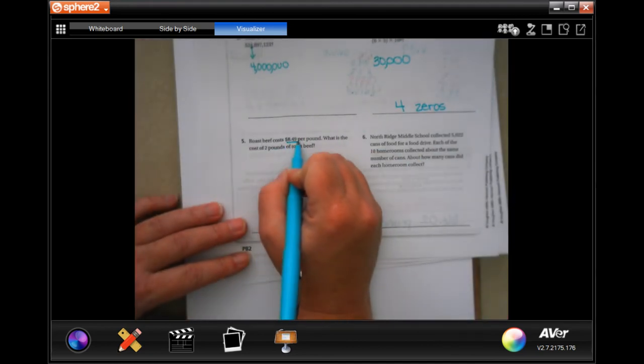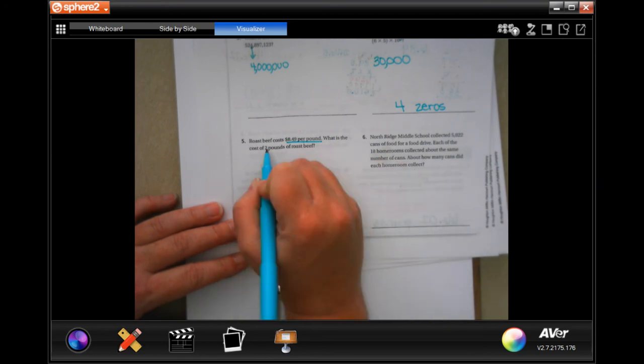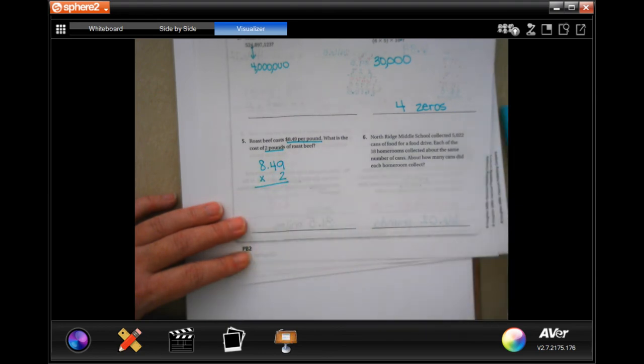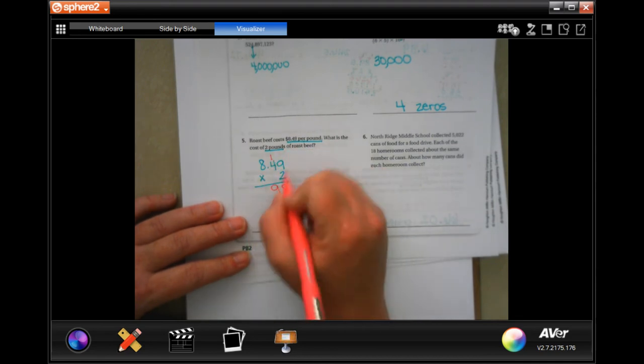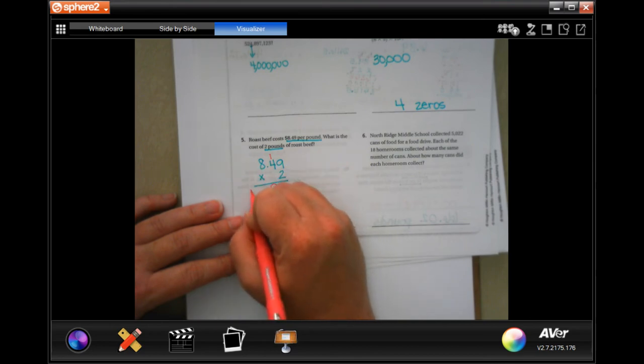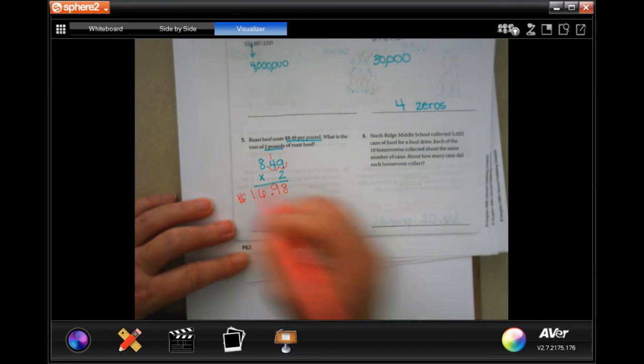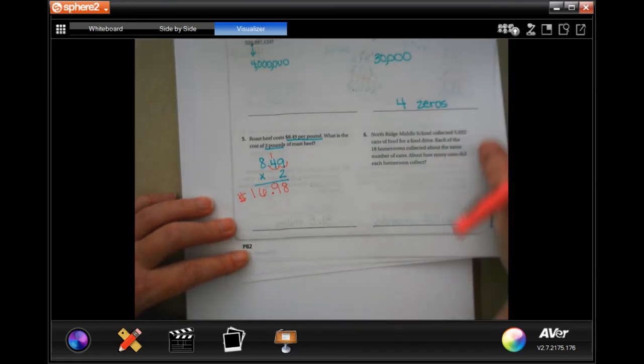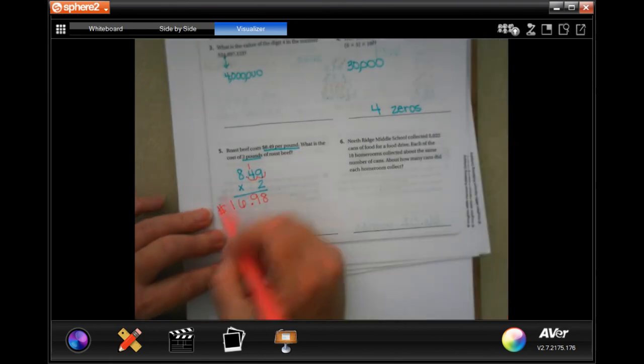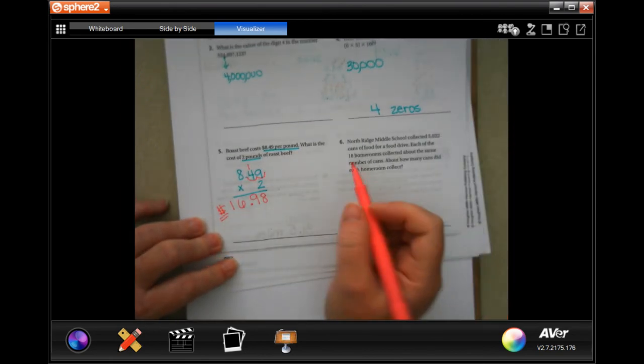Roast beef costs $8.49 per pound. What is the cost of 2 pounds? So we need to take that $8.49 and we need to multiply it by 2. 2 times 9 is 18. Carry the 1. 2 times 4 is 8. Plus 1 is 9. 2 times 8 is 16. We went in 1, 2 places. 1, 2 places. $16.98 guys. Make sure you're showing your work. And that dollar sign is your label. That is your word answer.